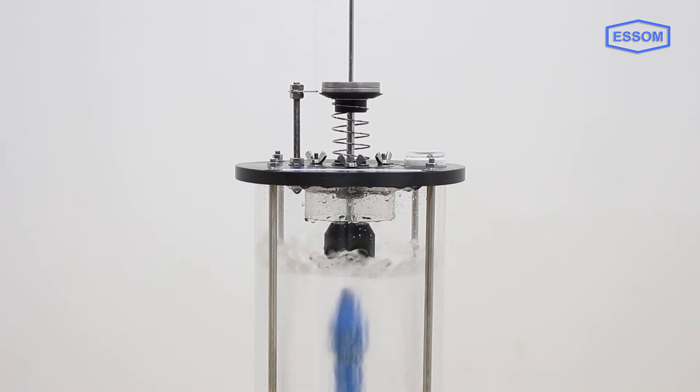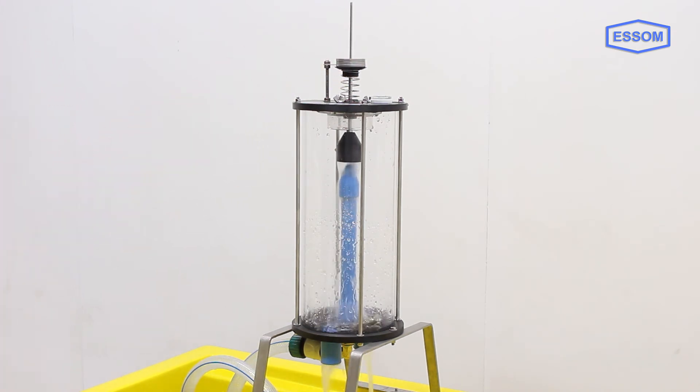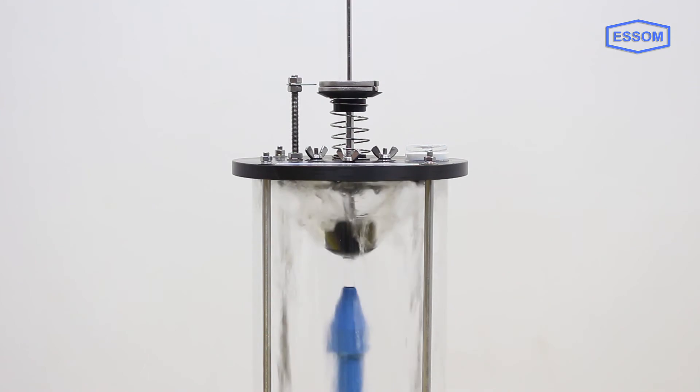Force on the target plate pushes its stem upward. Dead weight is then applied on the stem to counterbalance the force exerted by the water jet.